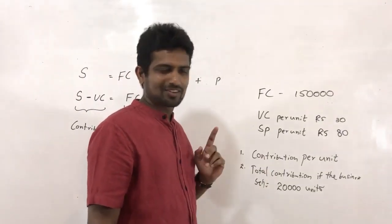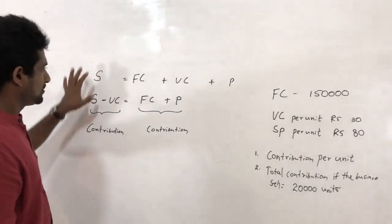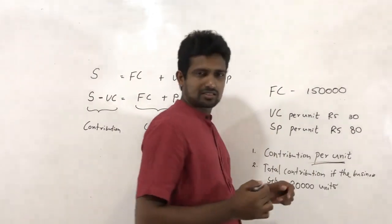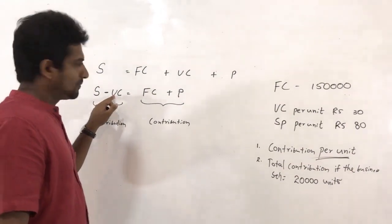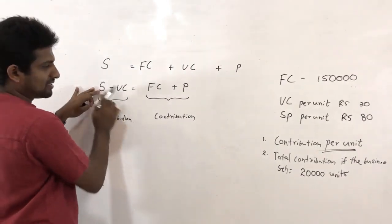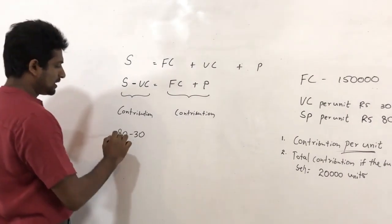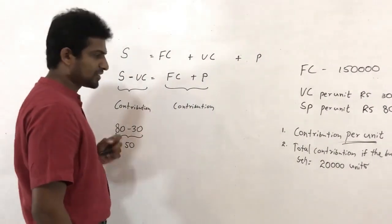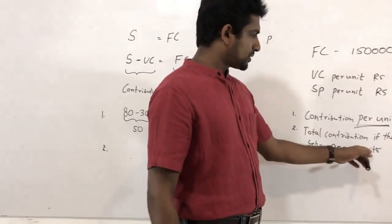Let's check the accuracy. The first question is contribution per unit — how to calculate it. Here, only per unit details are available: sales and variable cost, because the per unit fixed cost is not given, so you can't use that path. The path used is: selling price per unit is 80 minus variable cost per unit is 30, so 80 minus 30 gives contribution per unit of 50.